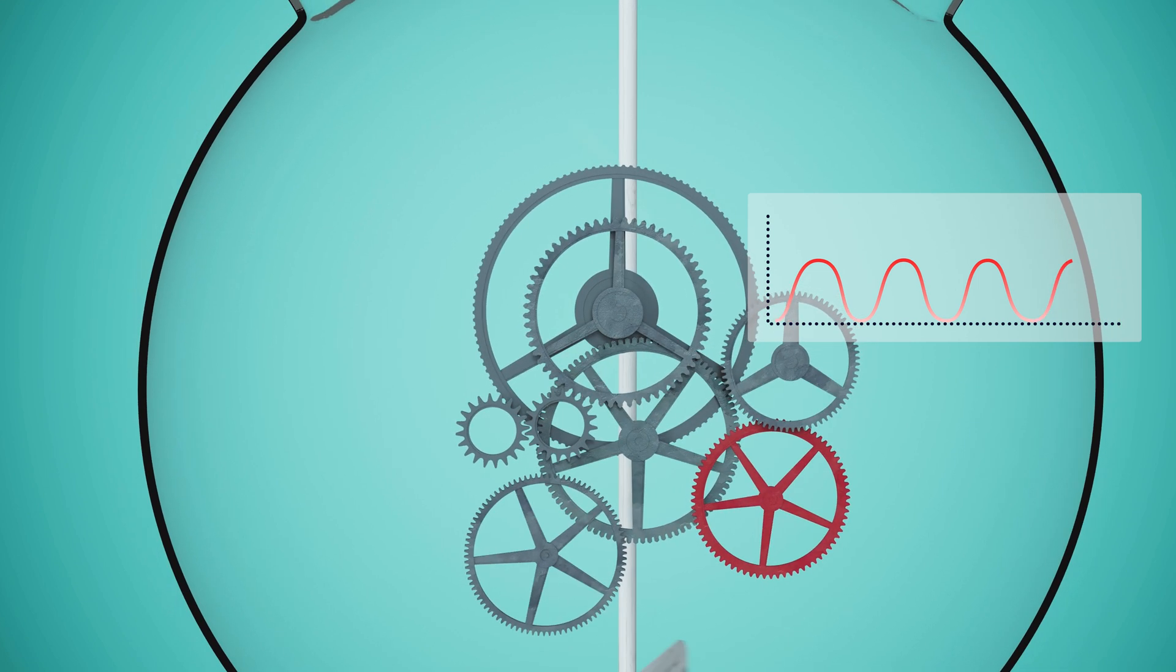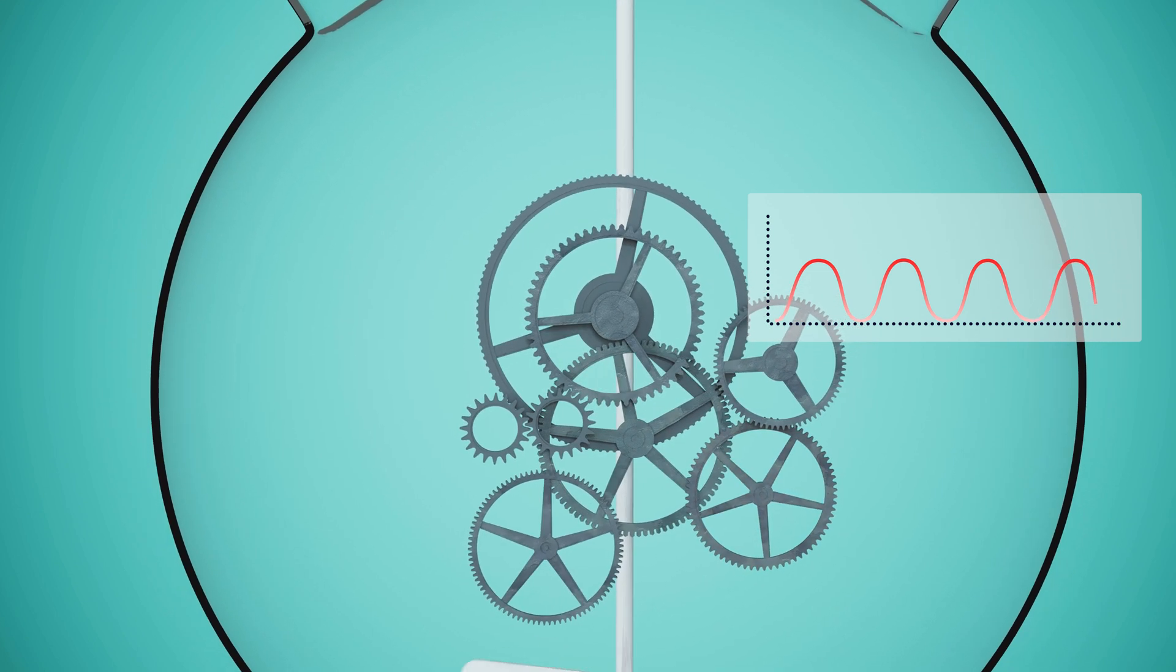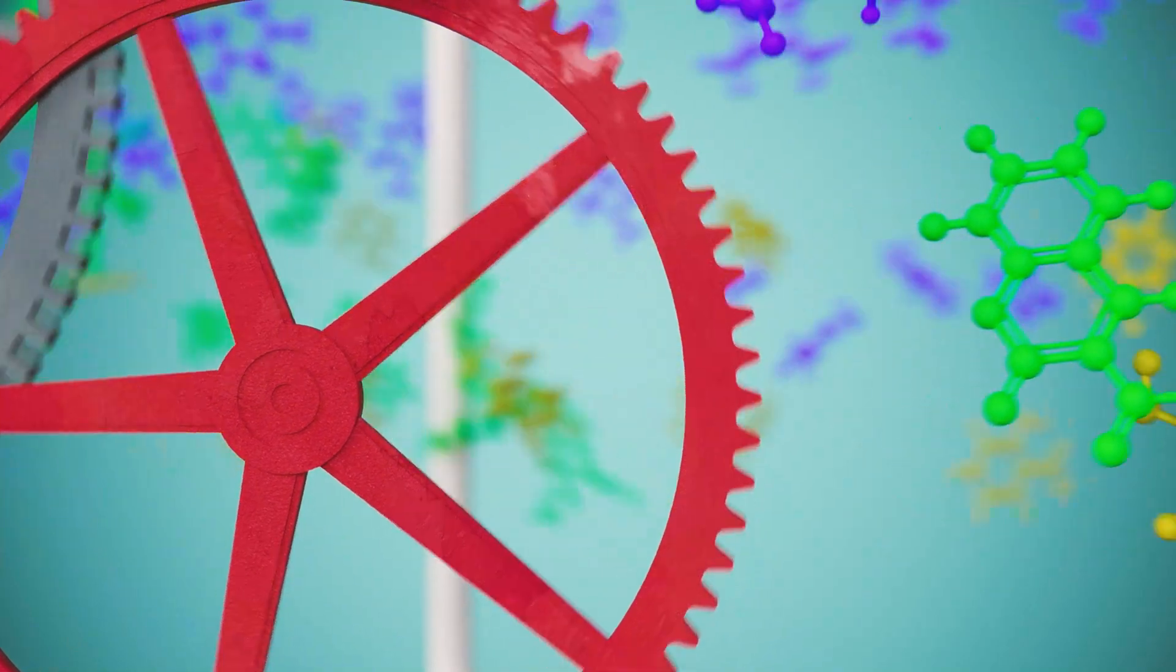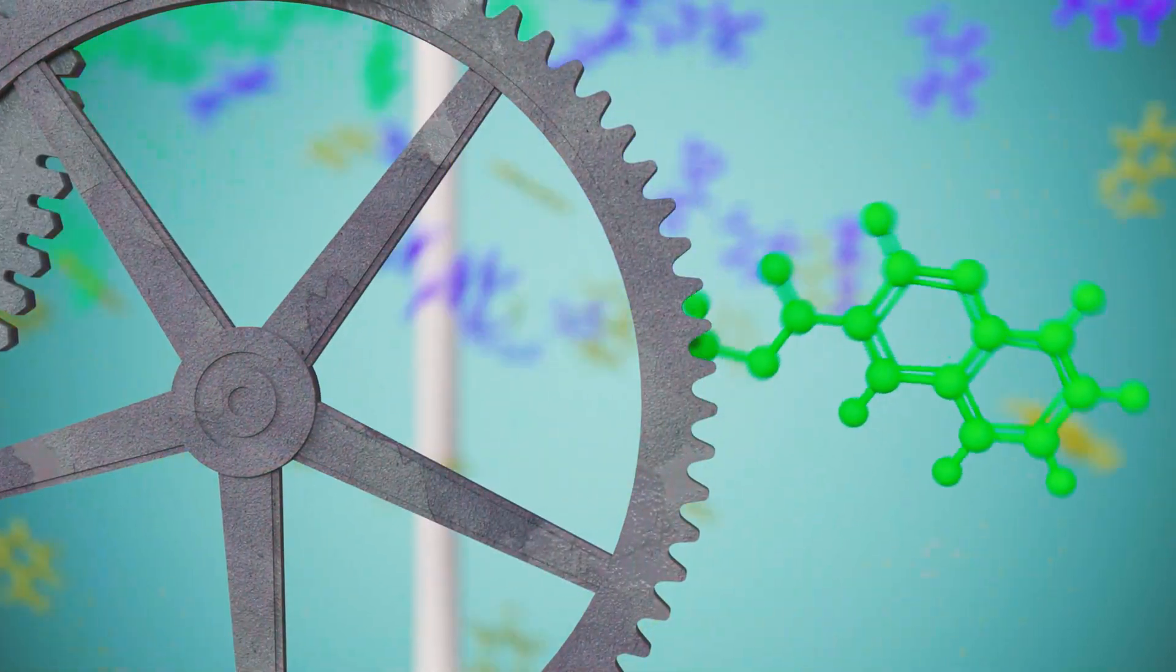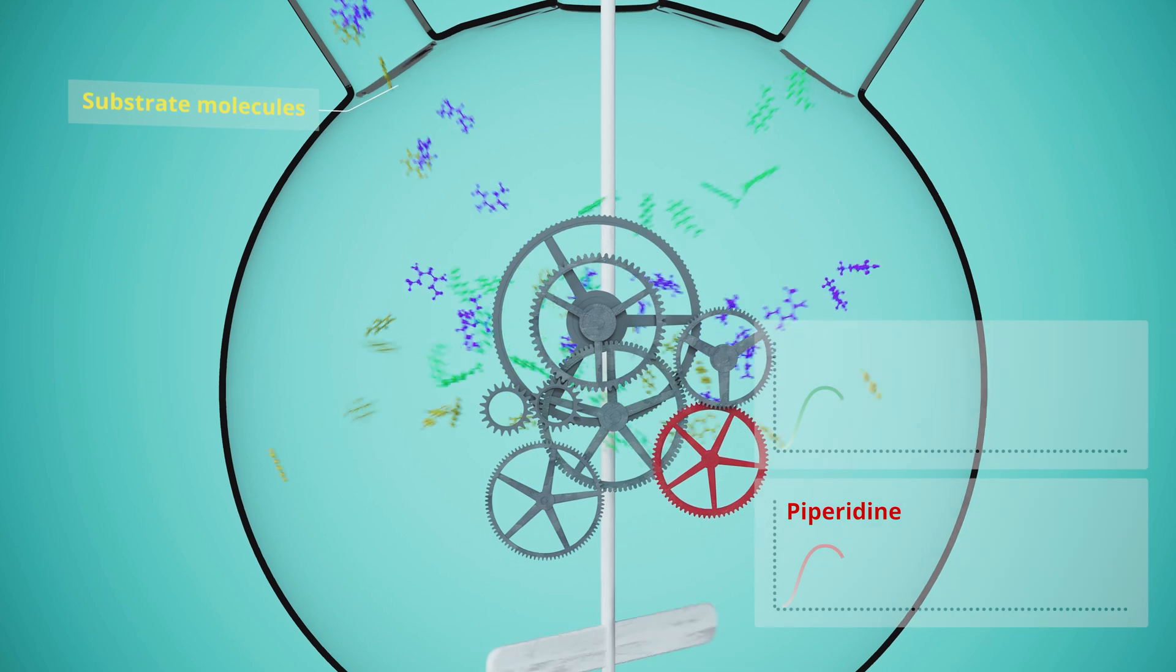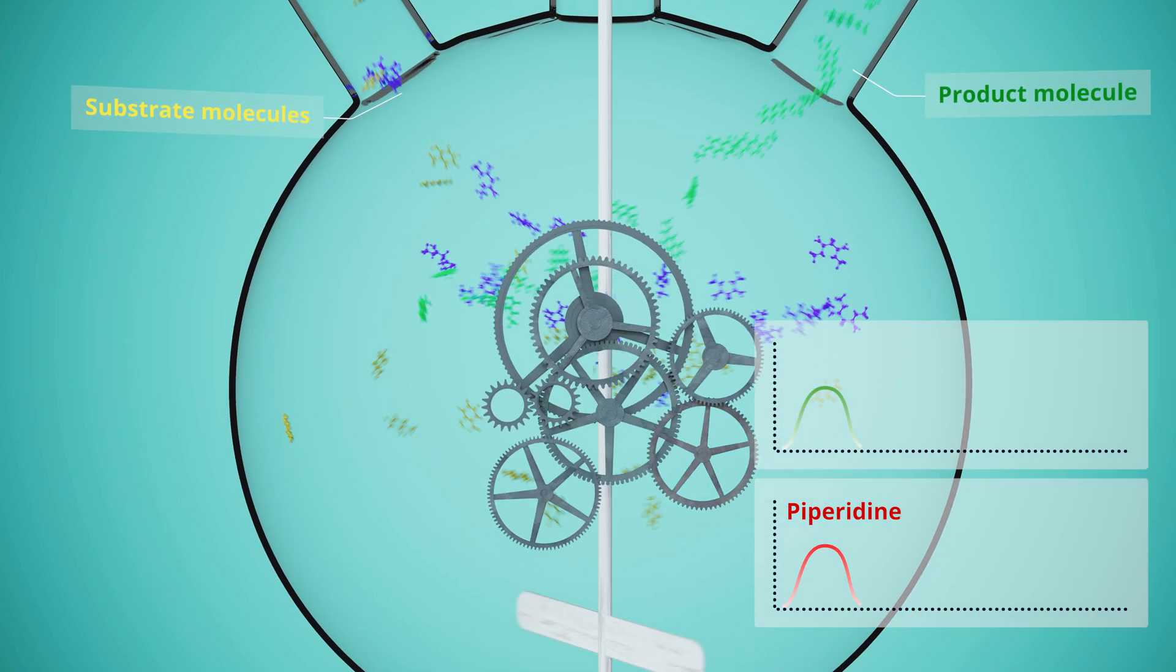But this chemical oscillator is not just a clock, because piperidine is a catalyst. It enables chemical reactions between other incoming molecules. This results in a periodic synthesis of desired chemical products.